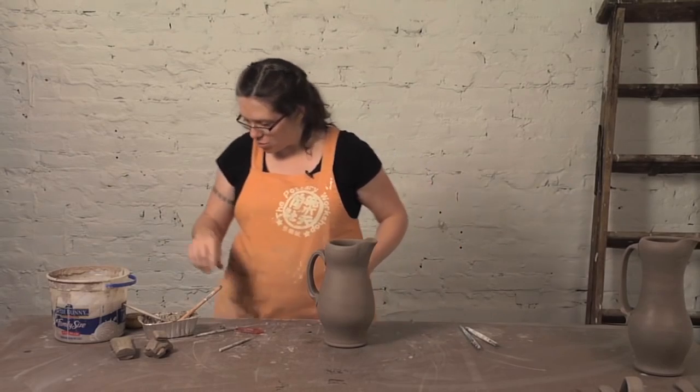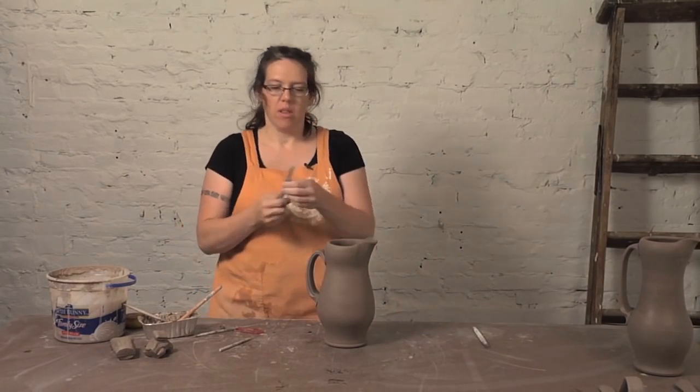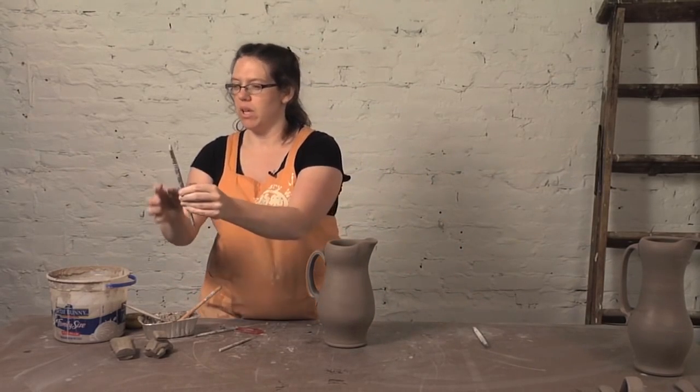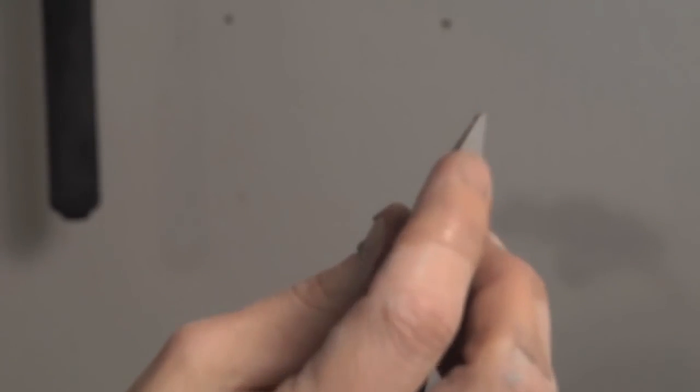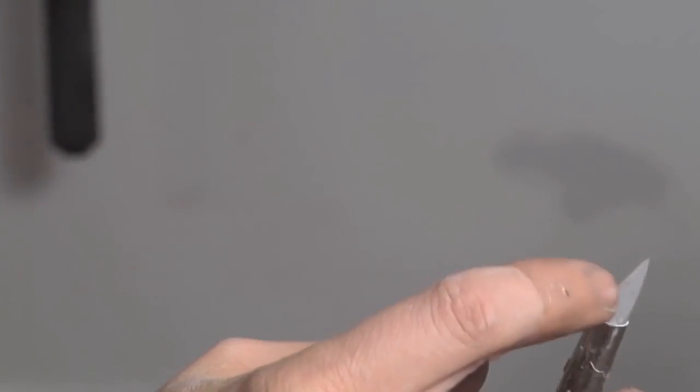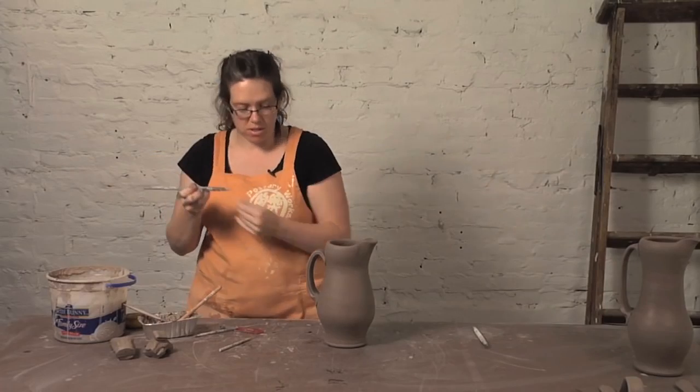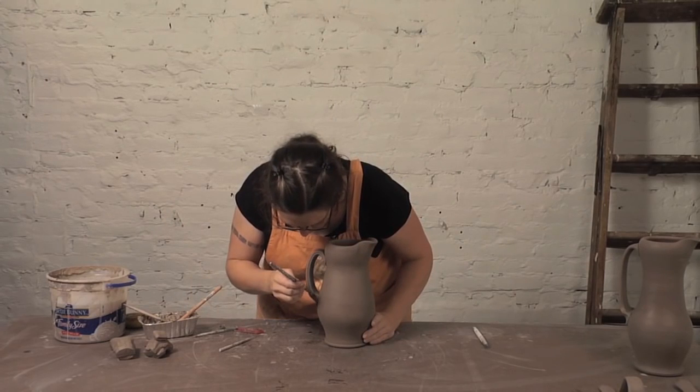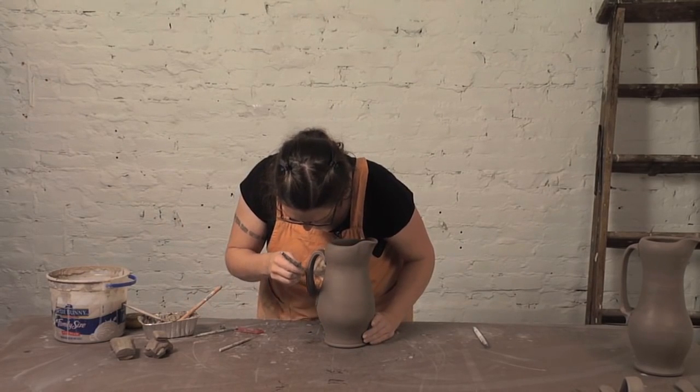So one edge is beveled. The other edge is just flat or slightly rounded. That beveled edge slips down inside of that seam really well, and it will help kind of redefine that seam.